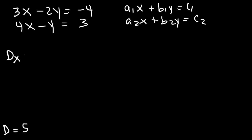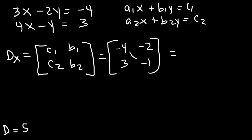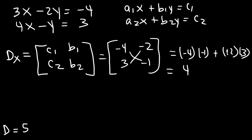Now let's calculate dx. We replace a1 and a2 with c1 and c2, so the elements are c1, c2, b1, b2. C1 is negative 4, c2 is 3, b1 is negative 2, b2 is negative 1. So it's negative 4 times negative 1, minus negative 2 times 3. Negative 4 times negative 1 is 4, and the two negatives cancel giving 2 times 3 which is 6. So dx is 4 plus 6, which is 10.